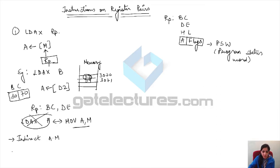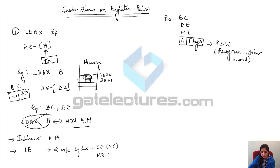This is an instruction of indirect addressing mode — indirectly you are extracting the address of the data from some registers. The size of the instruction is one byte, and it has two machine cycles: opcode fetch and then memory read. We are not allowing HL pair because it would duplicate MOV A,M.